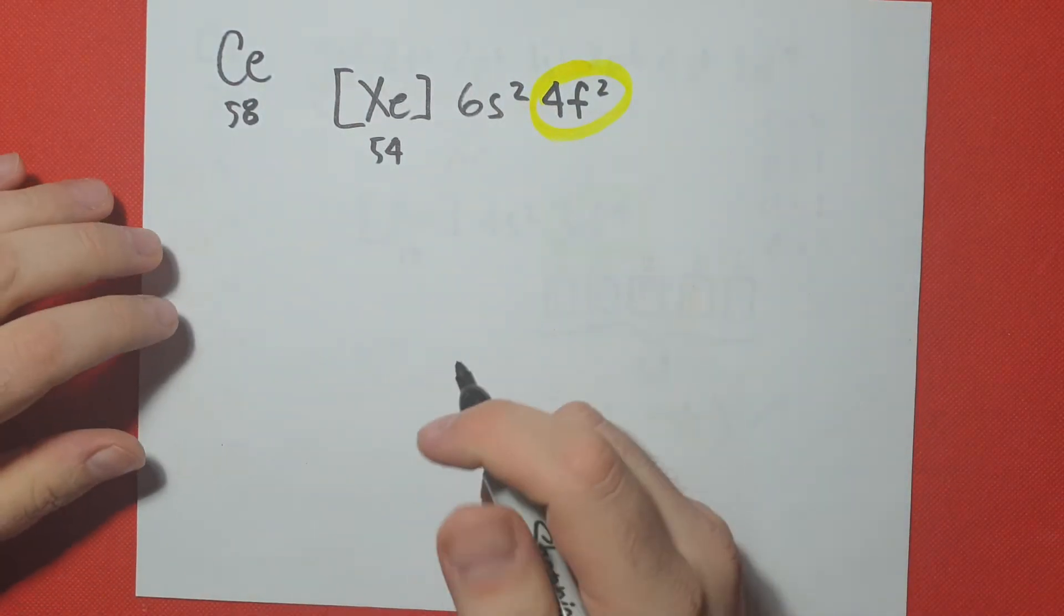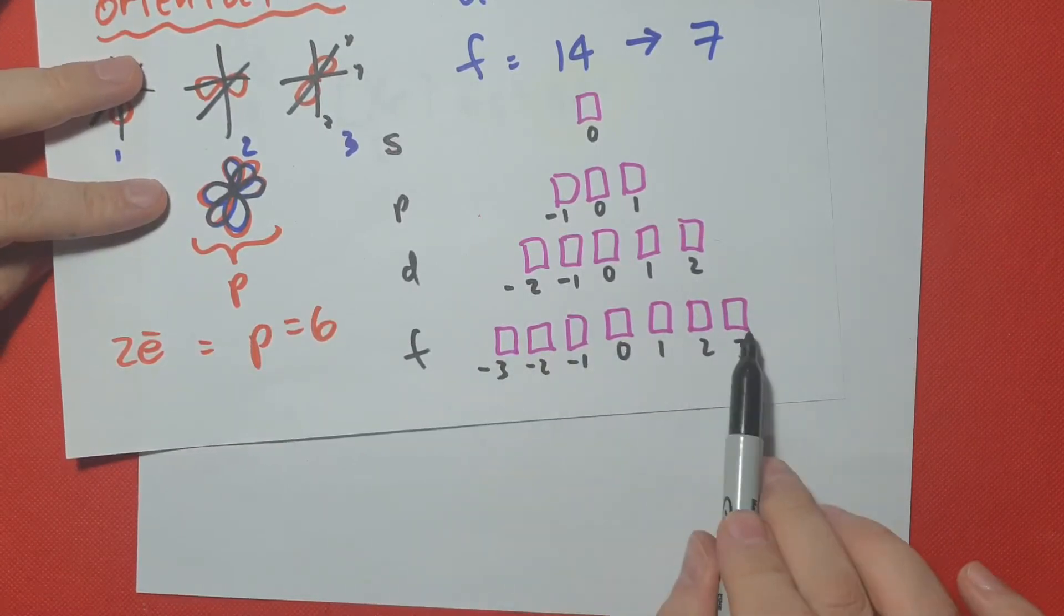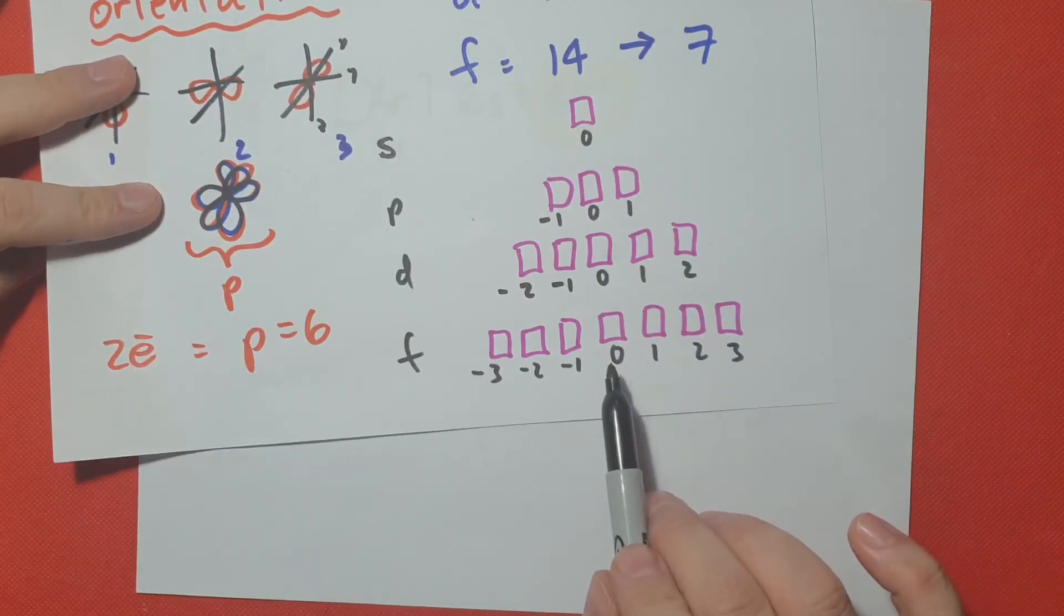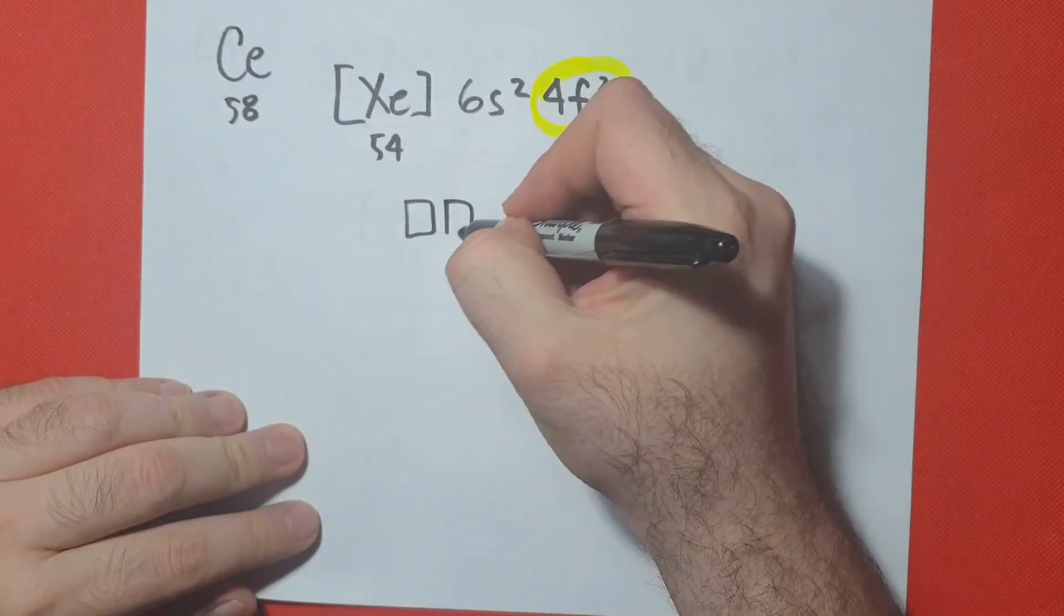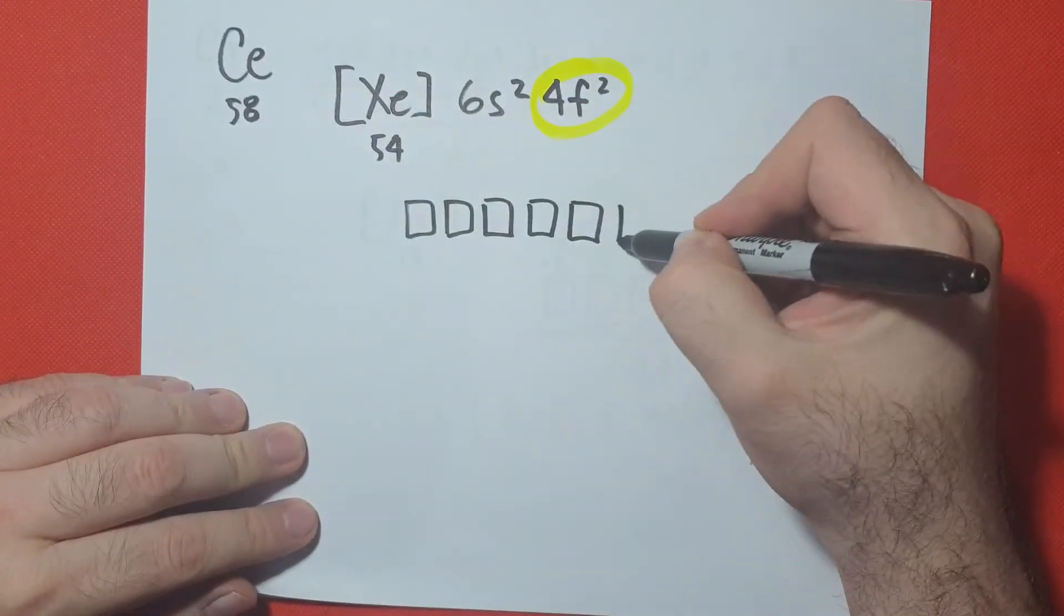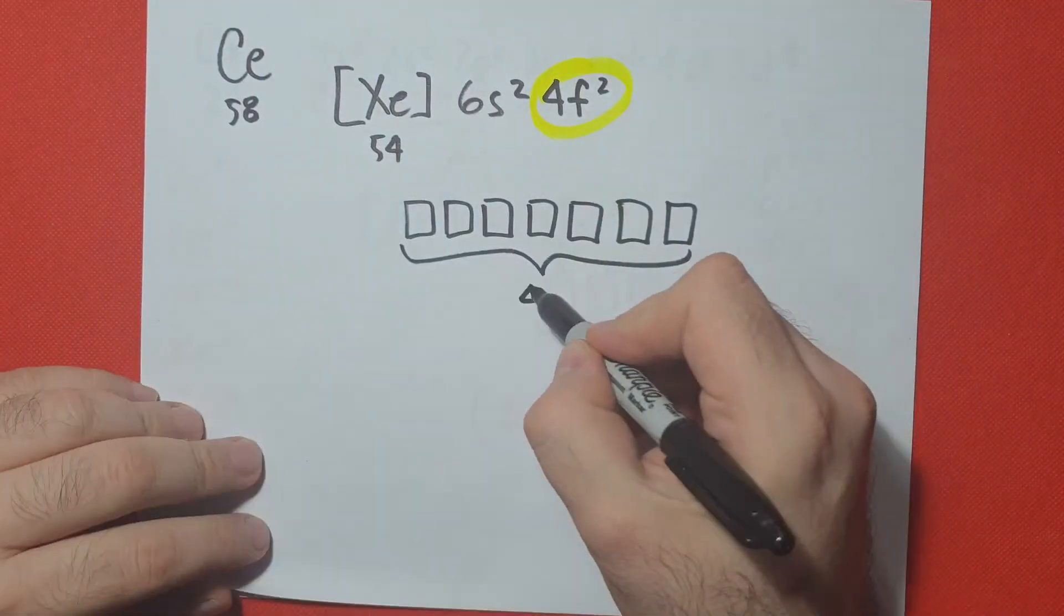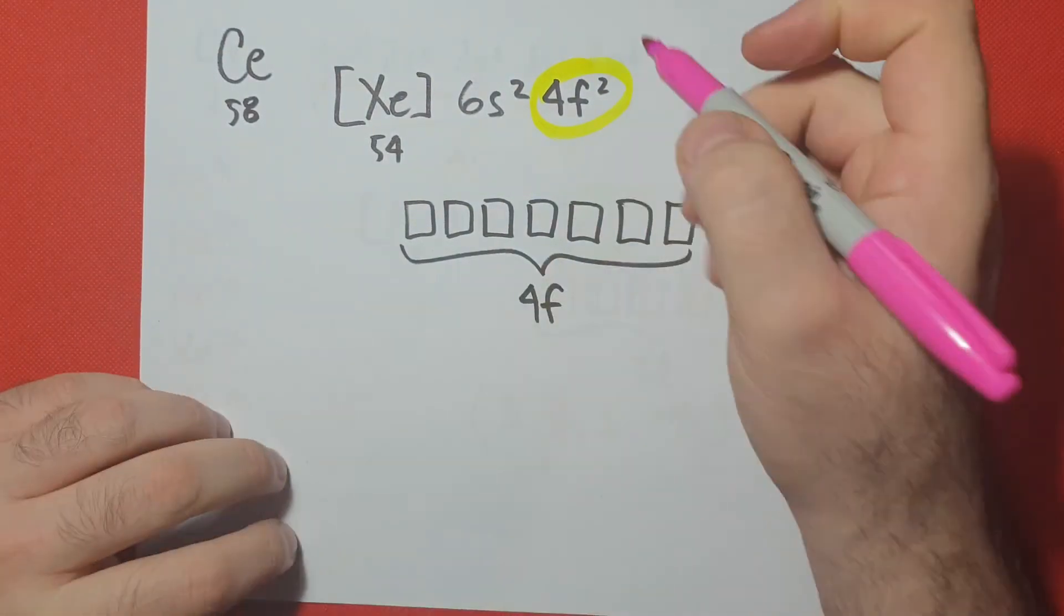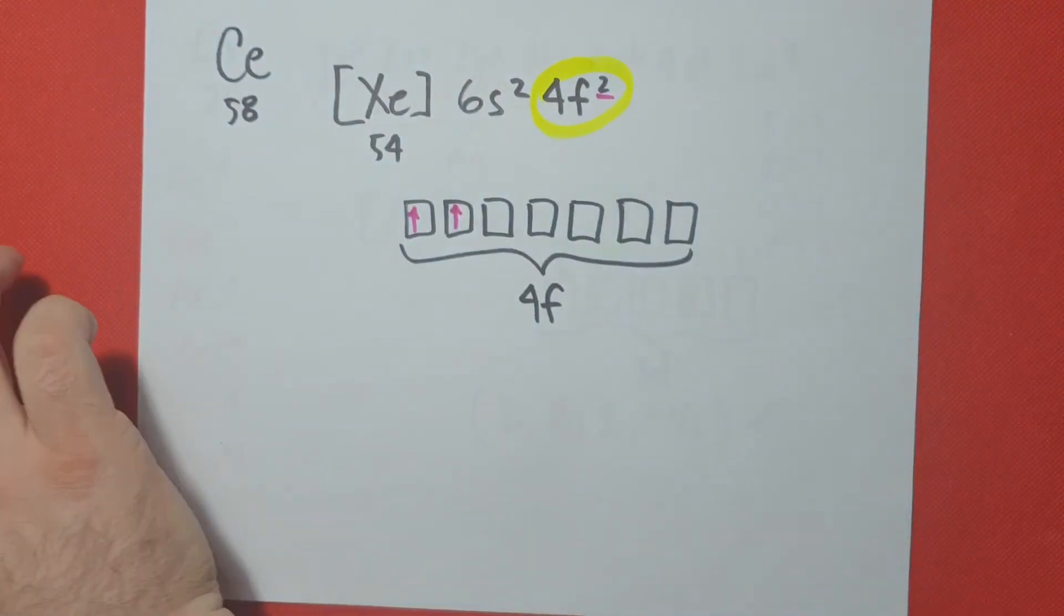We draw our orientations. And remember, f has seven orientations. So seven little boxes ranging from negative 3 all the way to 3 with the middle box being zero. So we're going to copy this and we're going to draw 1, 2, 3, 4, 5, 6, and 7 boxes representing those orientations for my f orbital. This is 4f. And then we're going to draw our electrons upspins first, but we only need two of them. So upspin, upspin. This is the last electron that we filled.